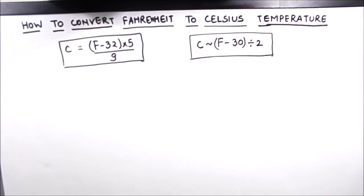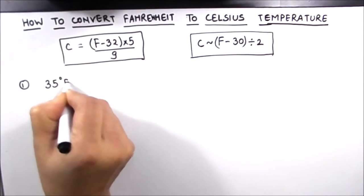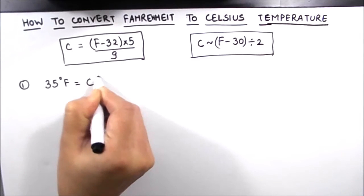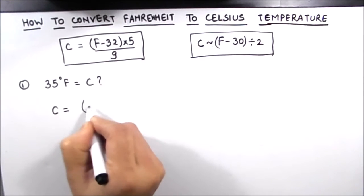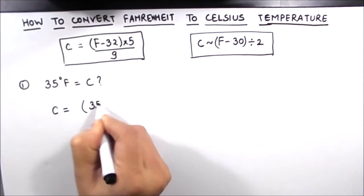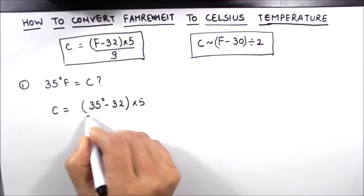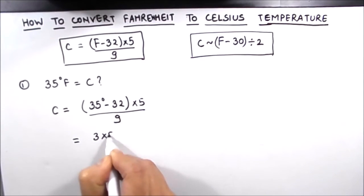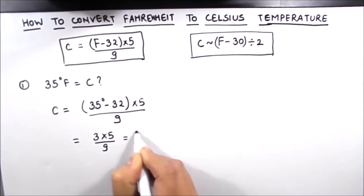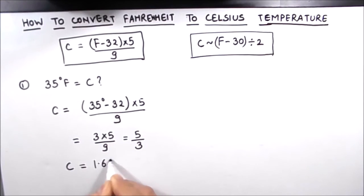So let us now solve a few examples using the formula. Let us convert 35 degrees Fahrenheit to Celsius. We just plug in the value of Fahrenheit in the formula. So C equals 35 minus 32, times 5 divided by 9. This equals 3 times 5 divided by 9, which equals 5 divided by 3, which equals 1.66 degrees Celsius. This is the final answer.